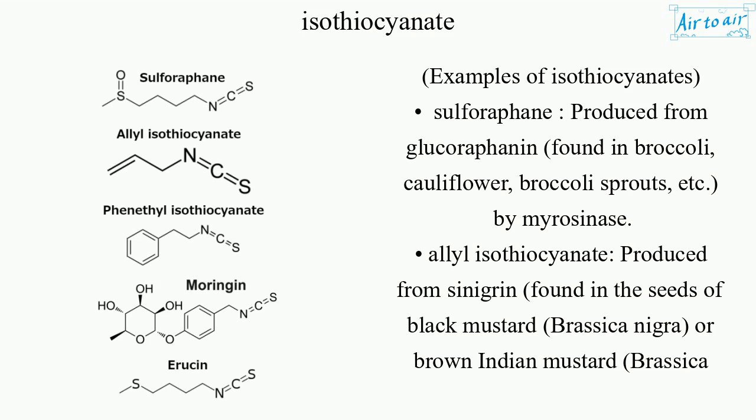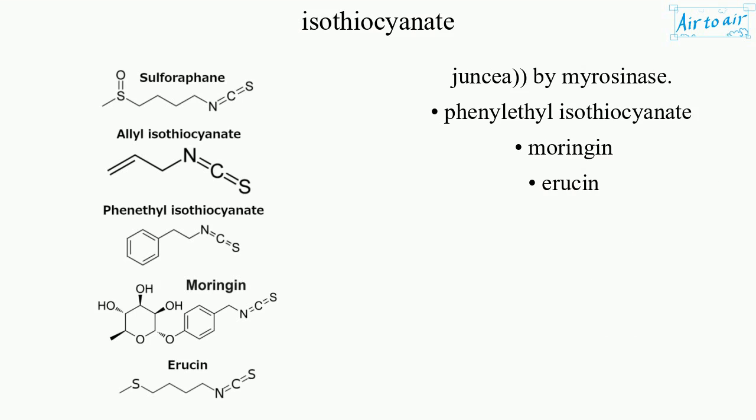Allyl-isothiocyanate, produced from sinigrin, found in the seeds of black mustard (Brassica nigra) or brown Indian mustard (Brassica juncea), by myrosinase. Phenolethyl-isothiocyanate, moringin, arusin.